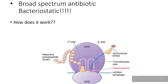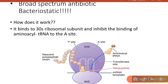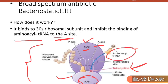So how does it work? It binds with the 30S ribosomal subunit and inhibits the binding of aminoacyl-tRNA to the A site. Here you can see the structure of the ribosome — the 30S unit and the 50S unit. Tetracycline works on the 30S subunit at the A site and inhibits the binding of aminoacyl-tRNA.